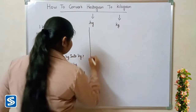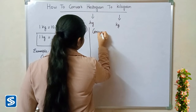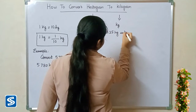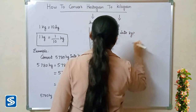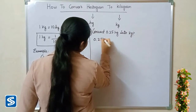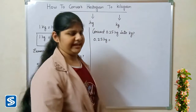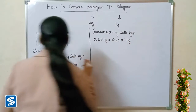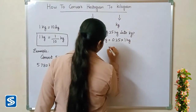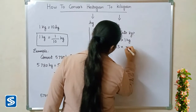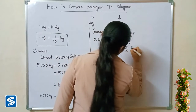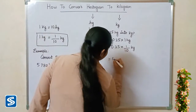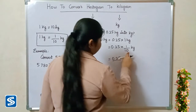Next example: convert 0.25 hectograms into kilograms. 0.25 hectograms can be written as 0.25 multiplied by 1 hectogram. We substitute 1/10 kilograms in the place of 1 hectogram, so 0.25 multiplied by 1/10 kilograms. 0.25 multiplied by 1 will be 0.25, so we get 0.25 divided by 10 kilograms.